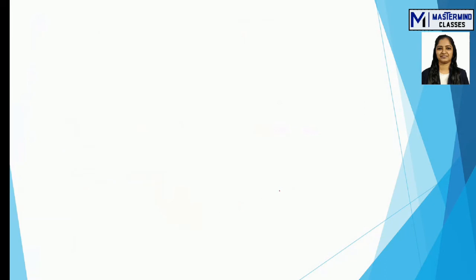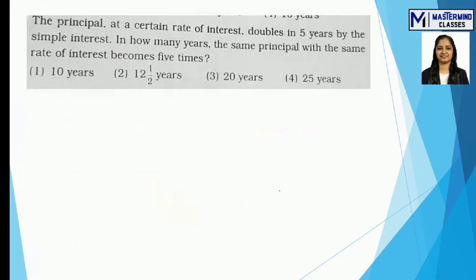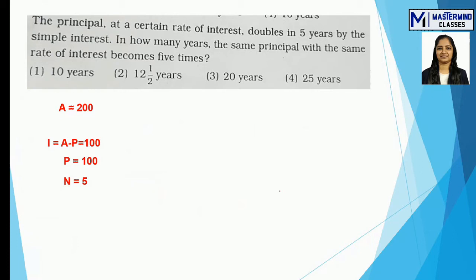Next example: a principal at a certain rate of interest doubles in 5 years by simple interest. Since no principal is given, we assume P = 100. Doubles means A = 200, so I = A − P = 100. N = 5 years. We need to find R, so we use the formula R = (I × 100) / PN and substitute.